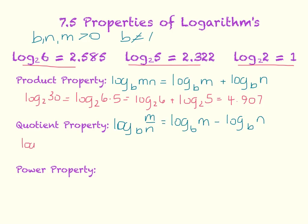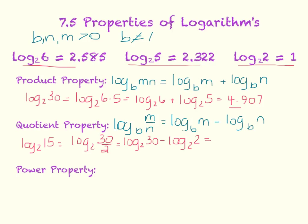For example, log base 2 of 15. I can rewrite this as log base 2 of 30 divided by 2, which equals log base 2 of 30 minus log base 2 of 2. From the previous example, log base 2 of 30 is 4.907. If I subtract 1, which is log base 2 of 2, I get 3.907.